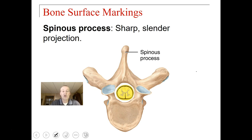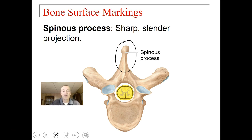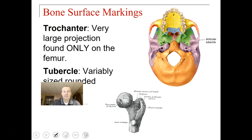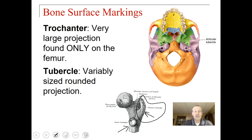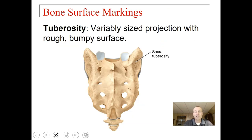A spinous process is a sharp, slender projection. If you take your finger and run it down the medial surface of your back, you will run across the spinous process of the vertebrae. A trochanter is a very large projection found only on the femur — you have the greater trochanter and the lesser trochanter. A tubercle is a variably sized rounded projection. A tuberosity is a variably sized projection with a rough, bumpy surface — places where ligaments or tendons attach.